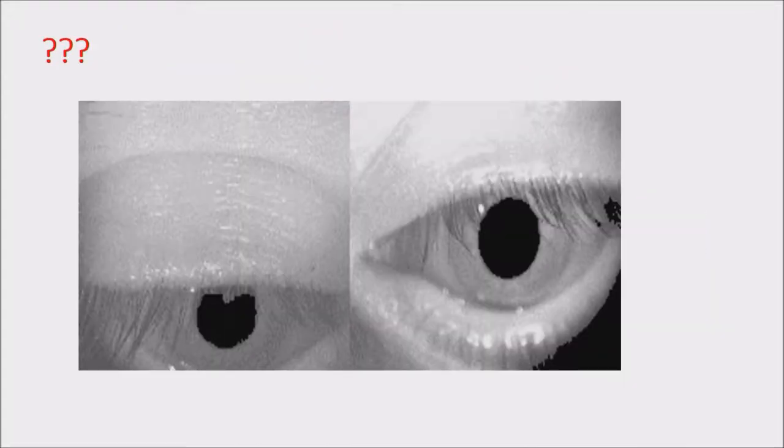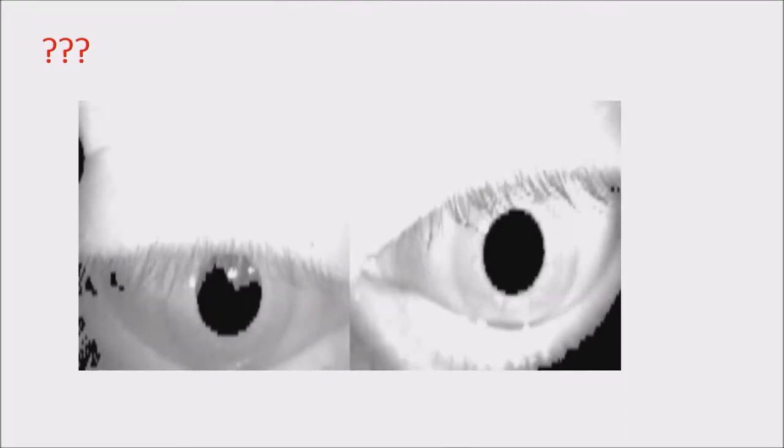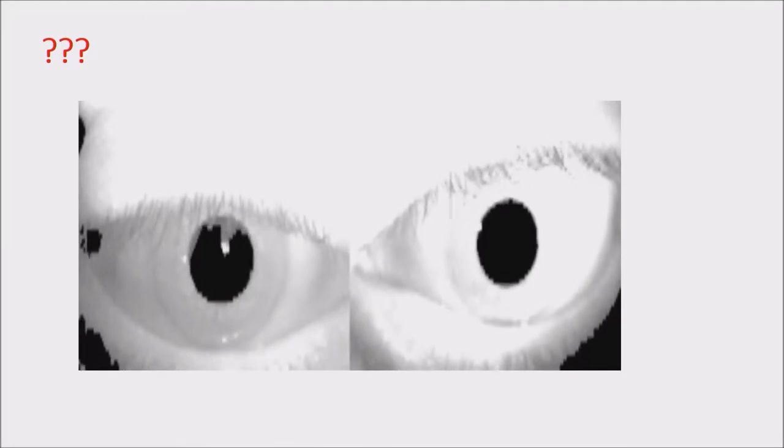In this video, observe the nystagmus pattern. You can see very strong up-beating torsional nystagmus, which is transient, followed by a more prolonged horizontal component to the right side. When we performed the McClure-Pagnini test, there was a reversible horizontal component on the other side — confirming this is a case of mixed posterior and horizontal canal BPPV.